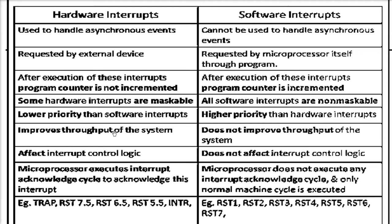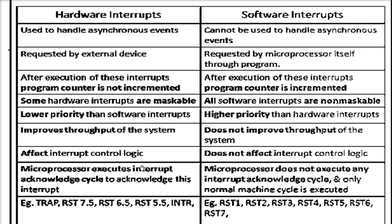Hardware interrupts improve throughput because devices give instructions or interrupts as needed. Software interrupts don't improve throughput because the microprocessor gets busy handling them repeatedly. Hardware interrupts affect the interrupt control logic, while software interrupts do not. RST 1 through RST 7 are all software interrupts, while TRAP, RST 7.5, RST 6.5, RST 5.5, and INTR are all hardware interrupts.